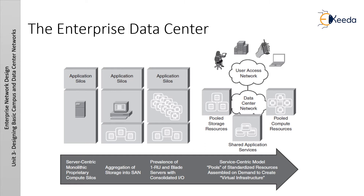In this figure, we see the server-centric data center model evolving to a service-centric model. In this diagram, we can see that application silos are there. So there are different applications, end-user access network, data center network, pooled storage resources. In this figure, shared application services show the transition from server-centric monolithic proprietary campus silos, aggregation of storage into storage area networks, prevalence of 1U and blade servers with consolidated I/O, to a service-centric model with pools of standardized resources assembled on demand to create virtual infrastructure.